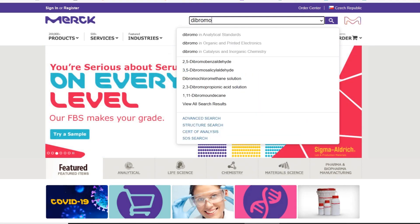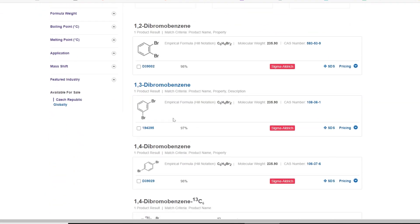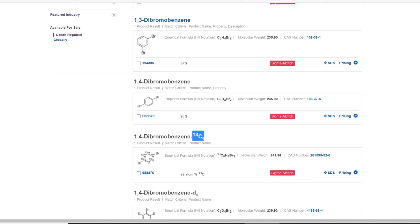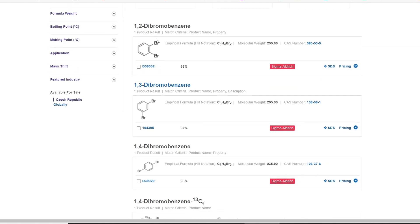So let's see what Merck is selling. All right, it seems they have one, two, three—oh, that's the heavy carbon version and that's the deuterated heavy hydrogen version. It seems there are only three isomers of dibromobenzene for sale on Sigma-Aldrich's site.